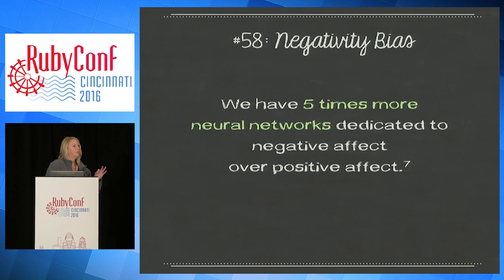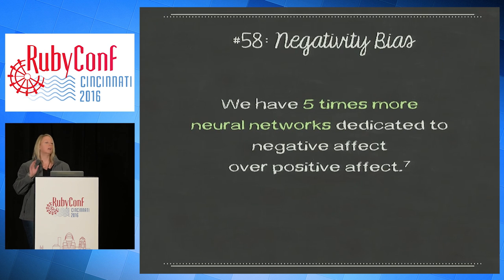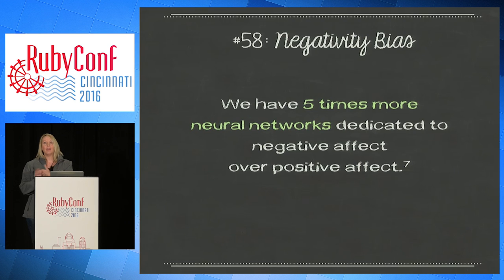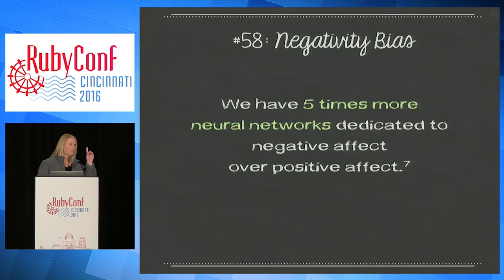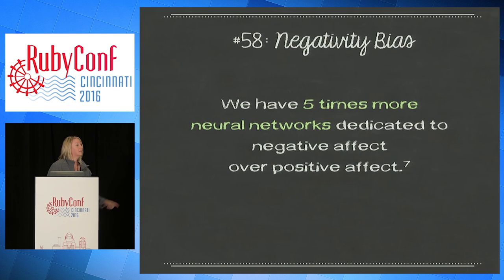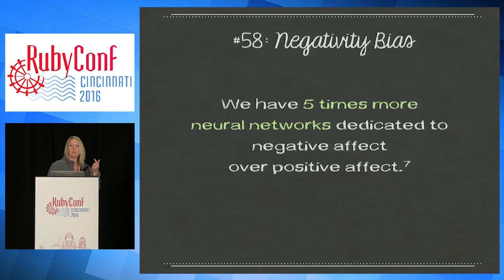We have five times the neural networks dedicated to negative affect over positive affect. Negative affect includes things like fear, grief, sadness, shame, guilt. Positive affect is joy, comfort, kindness, compassion, laughter. So we're constantly scanning for threats — that's what our brain does. We spend five times more effort analyzing, worrying, and processing negative feedback than positive ones. If you're aware of that, you can mitigate it a little — you can snap out of it a little easier when you realize it's not your fault, it's just human nature.